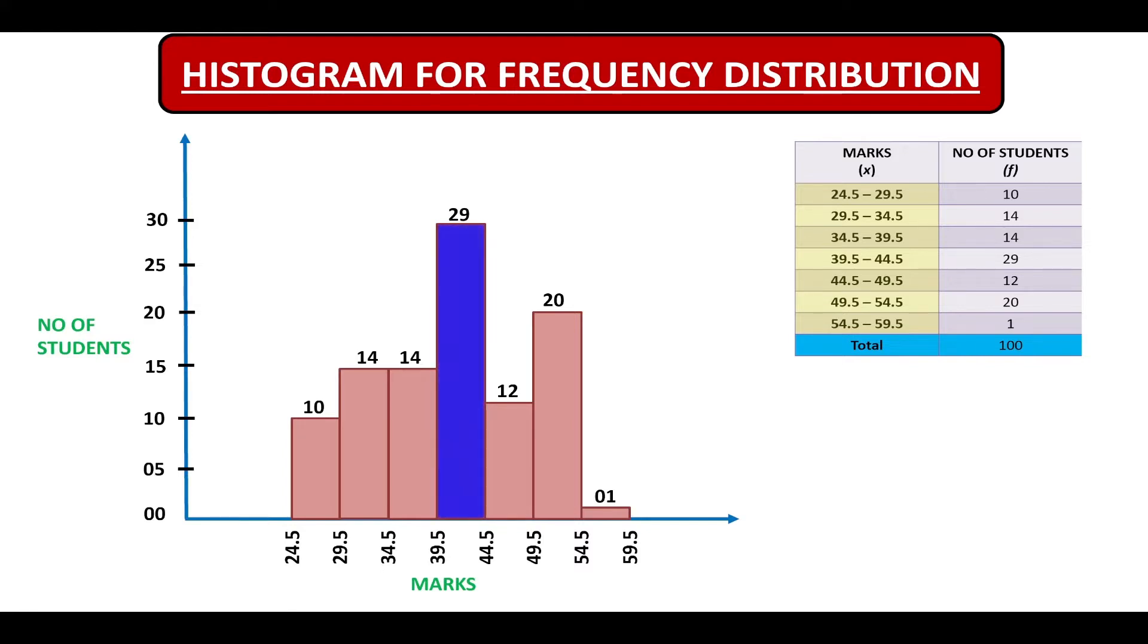In other words, suppose you are the teacher teaching this subject and some other teacher asks you how have your students fared in the subject, then you will not tell her marks scored by each student. You will just answer that maximum students have scored between 39.5 to 44.5 marks.